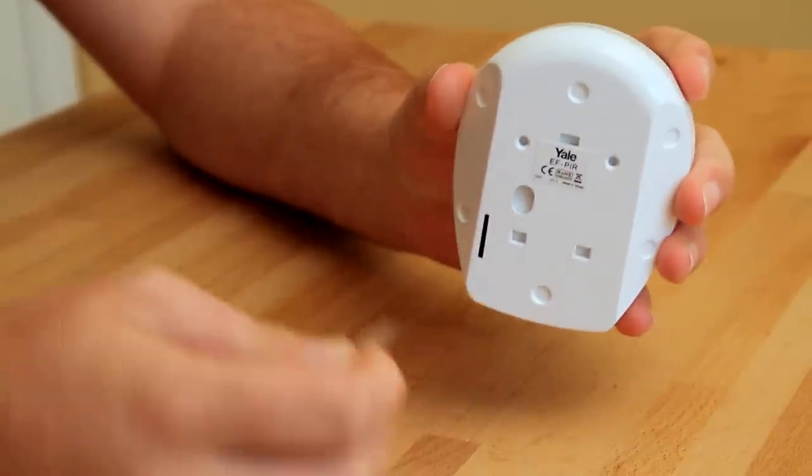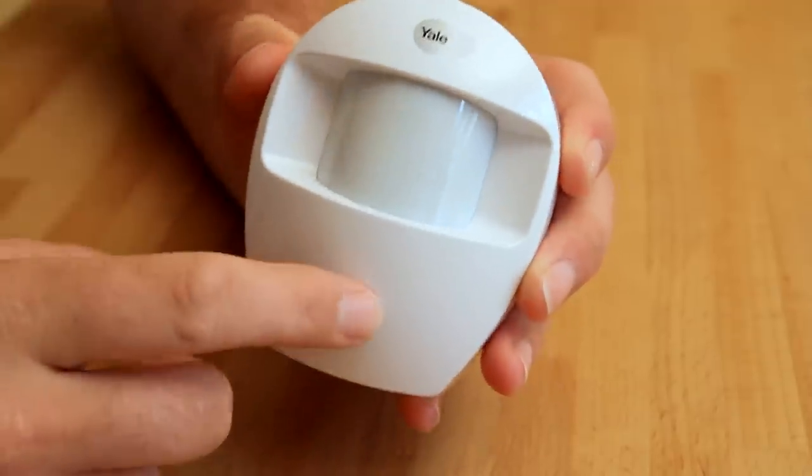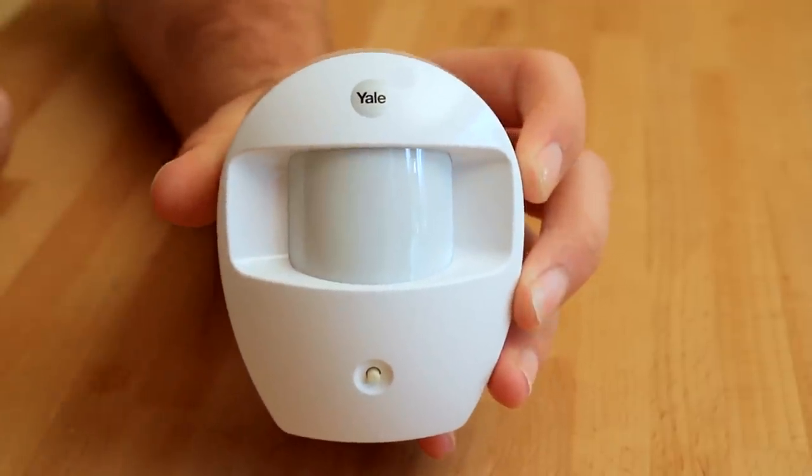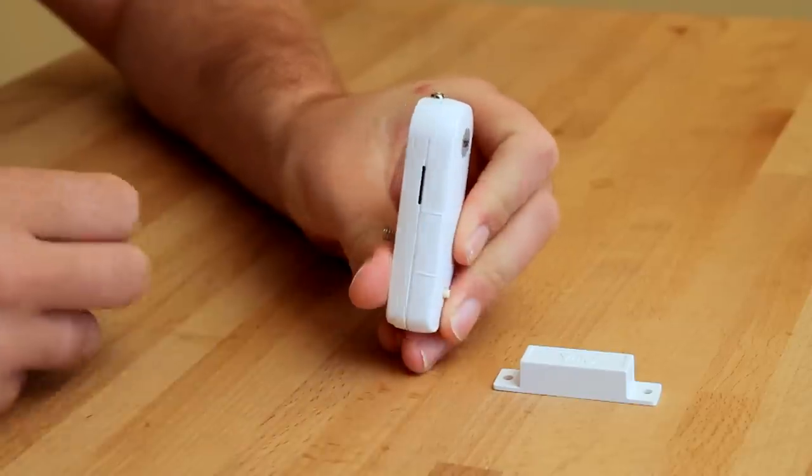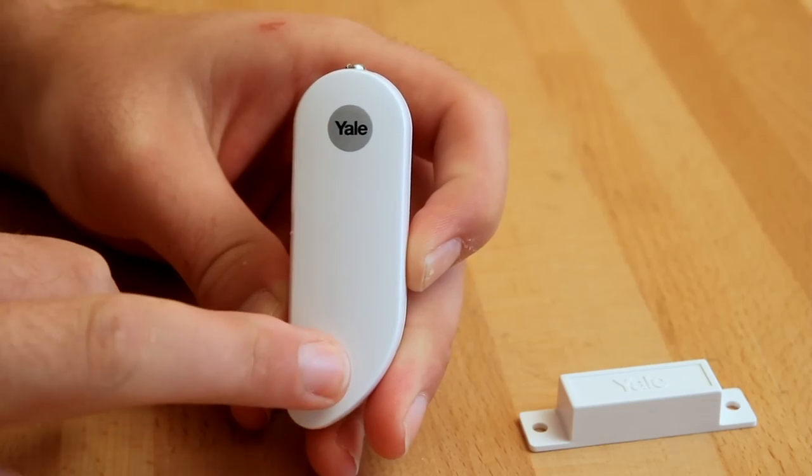Pull out the plastic tab on the back of the PIR. You should now be able to see a flashing light through the lens. Repeat this process for additional PIRs.